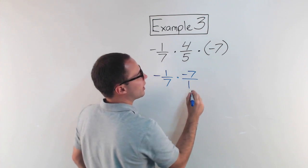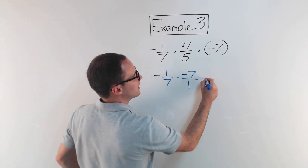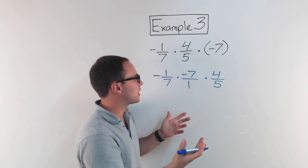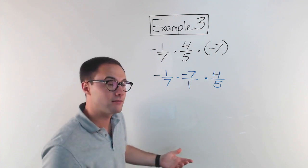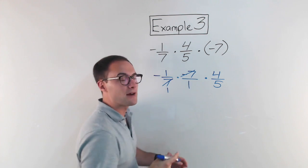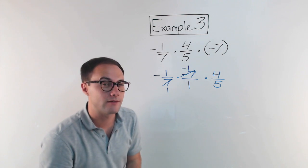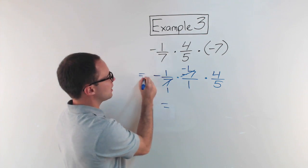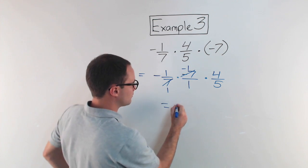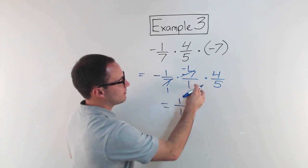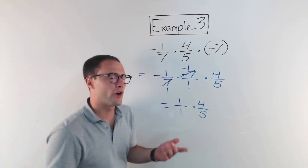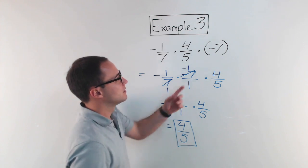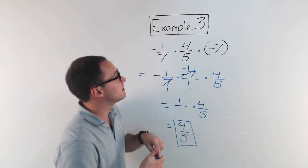So I've got negative one-seventh times negative seven over one, and then still times four-fifths. Always try to simplify before you multiply. Seven and negative seven have a common factor of seven, so that becomes one, and negative seven divided by seven is negative one. So negative one times negative one is one, and one times one is one. Then one over one is just one, times four-fifths is four-fifths. Rearranging and simplifying really made this problem a lot easier.